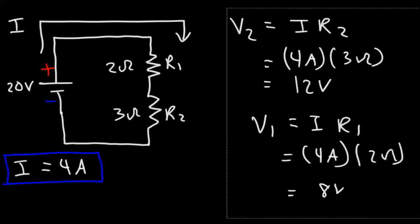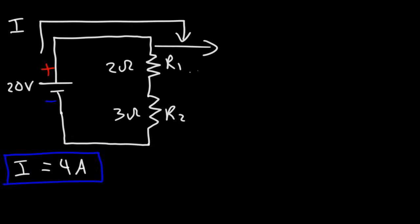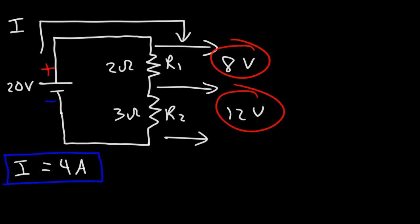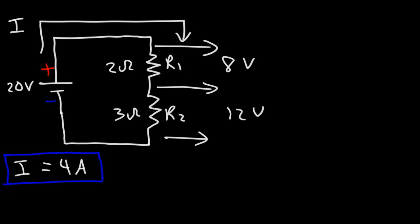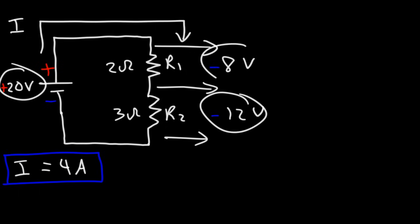If you take a voltmeter and connect it across R1 you'll get 8 volts, and across R2 you'll get 12 volts. Notice that the sum of the voltage drops equals the battery voltage — that's Kirchhoff's voltage law, which states the sum of voltages around a closed loop must add to zero. The battery delivers energy (positive 20V), and the resistors consume it (negative 12V and negative 8V), so positive 20 plus negative 12 plus negative 8 equals zero.